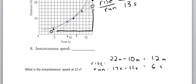So the rise, the difference there, was 12 meters. The run across here was 6 seconds.